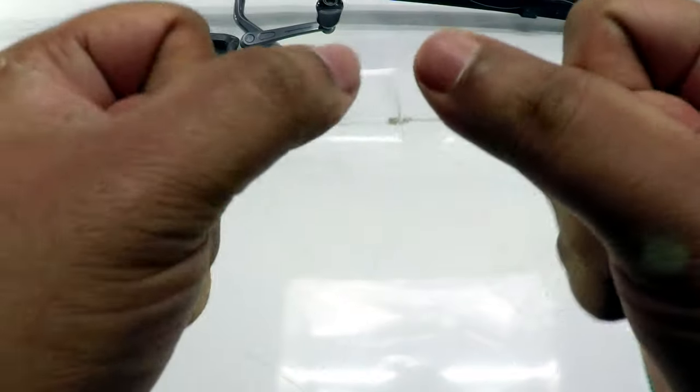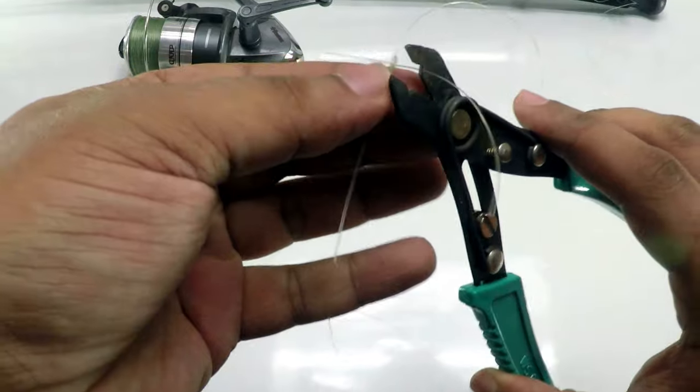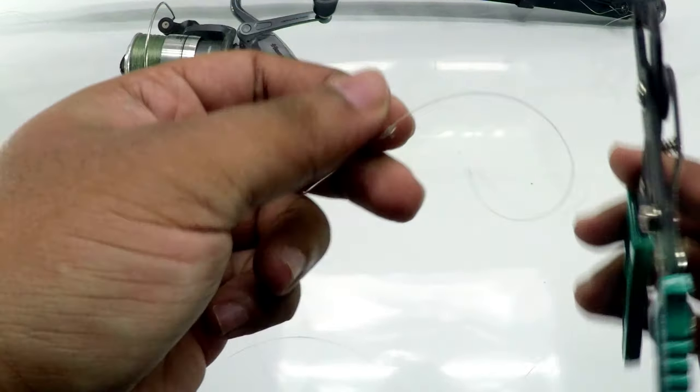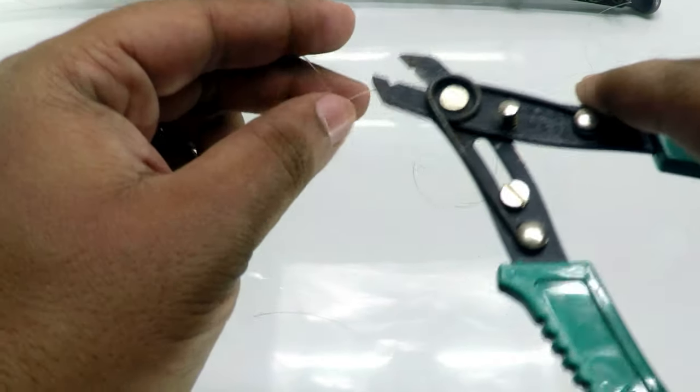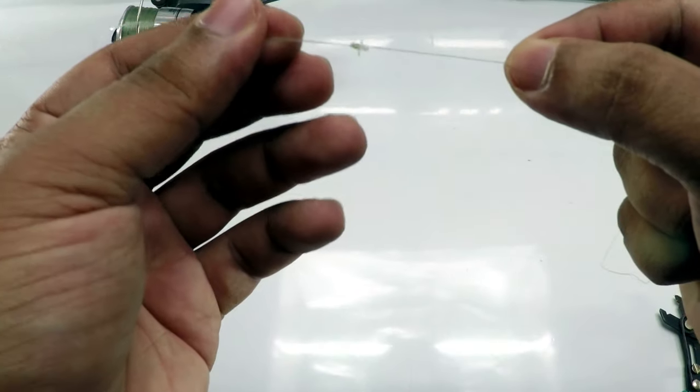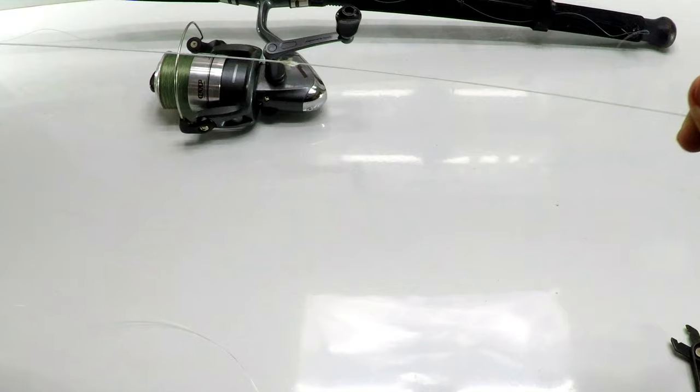This is the blood knot. Once you've pulled it very tightly, cut off the edges from here and here. Trim it in a decent manner. As you can see, this blood knot is pretty thin and you won't even feel it.